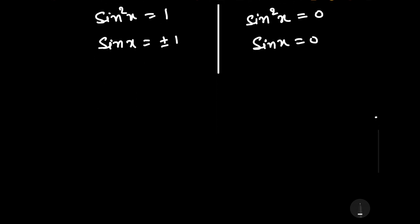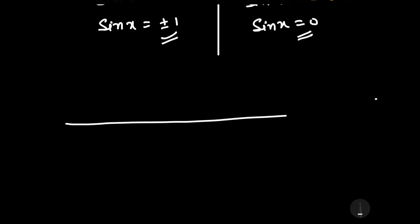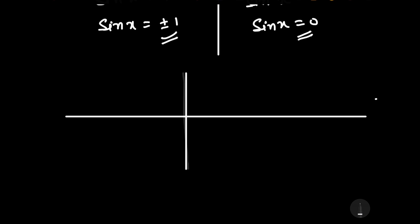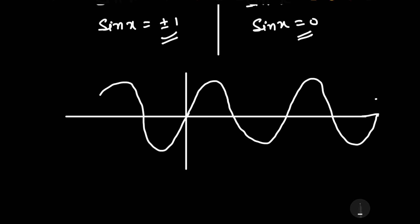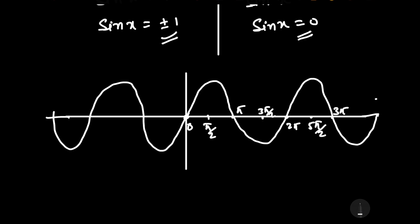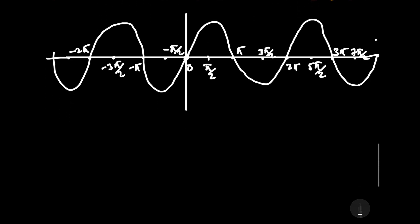Now let us find the value of x where sin x equals plus or minus 1, and where sin x equals 0, by drawing the graph of sin x. The graph of sin x has the following key x-values: 0, π/2, π, 3π/2, 2π, 5π/2, 3π, 7π/2 on the positive side, and minus π/2, minus π, minus 3π/2, minus 2π on the negative side. From the graph, sin x equals 0 at 0, π, 2π, 3π, and so on.